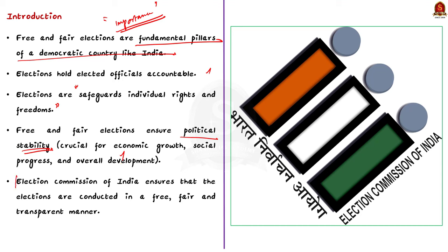To ensure free and fair elections, we need an independent body. In India, we have the ECI — Election Commission of India — to ensure that elections are conducted in a free, fair, and transparent manner. But for the election commission to perform its duty, it needs to be independent. This can serve as the introduction.